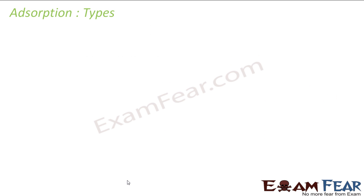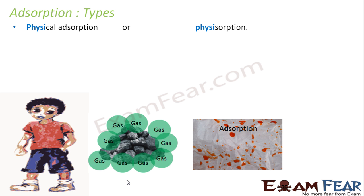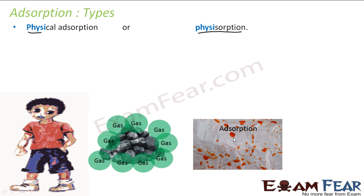There are two types of adsorption. One is physical adsorption, also called physisorption. In this case there is no chemical reaction. For example, accumulation of dust particles on the skin, adsorption of hydrogen or chlorine gas by charcoal, or water molecules adsorption on plastic.